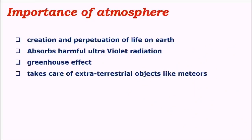Another important function of the atmosphere is that it does not allow extraterrestrial objects to hit the earth. In most cases, materials which enter the earth's atmosphere get burnt in the mesosphere, and as a result most of them don't hit the earth's surface. If these substances did hit the earth's surface, it would be catastrophic, leading to volcanism, earthquakes, tsunamis, and various other natural calamities.